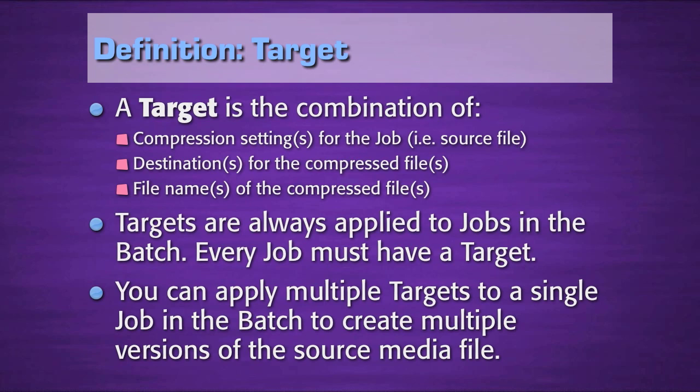You can apply multiple targets to a single job in the batch to create multiple versions of the source media file. In other words, you can apply multiple compression settings — which go to multiple destinations — to a single source media file, and store that source media file and all those settings in the batch. So batches contain jobs, and jobs contain targets.